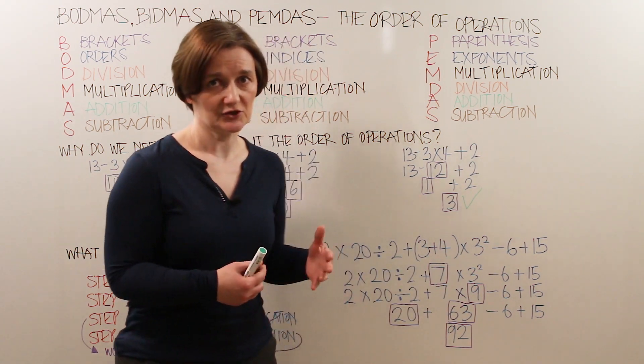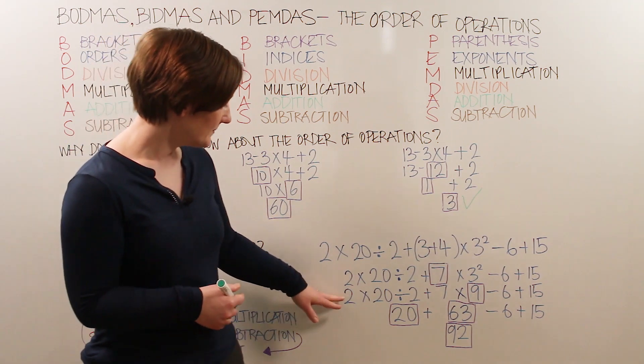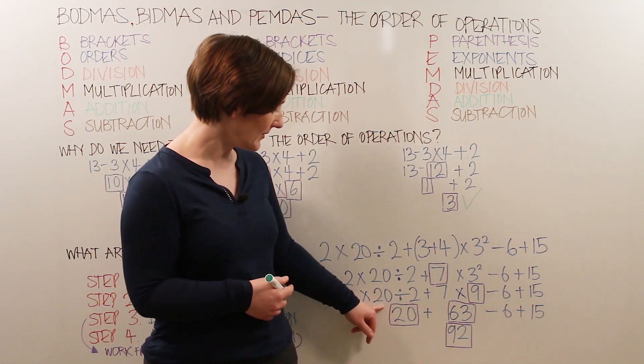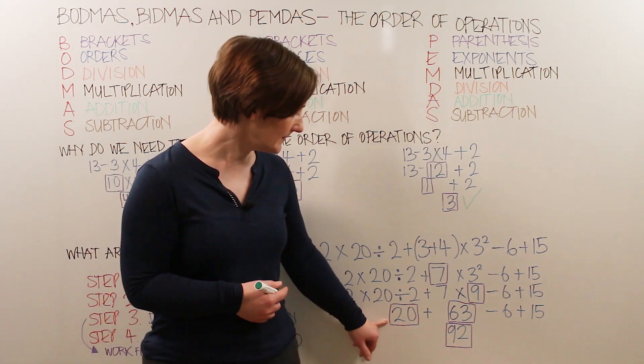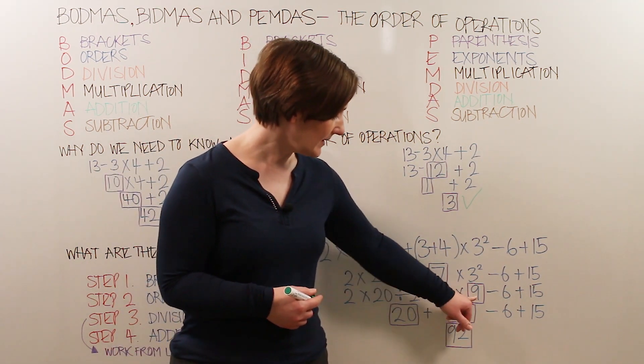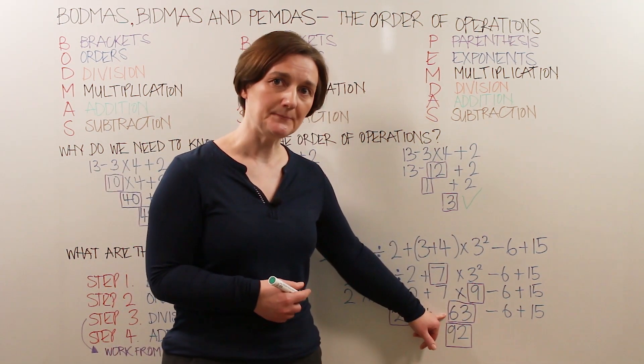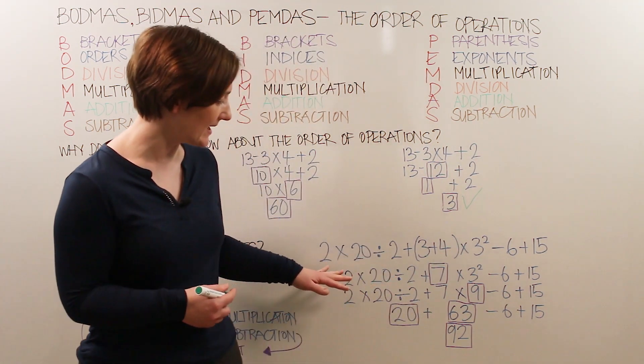Step 3 is division and multiplication. So we need to take the 2 multiplied by the 20 and divide by 2, which gives us a single number of 20. We need to multiply the 7 and the 9, which gives us 63. That's all the division and multiplication done.